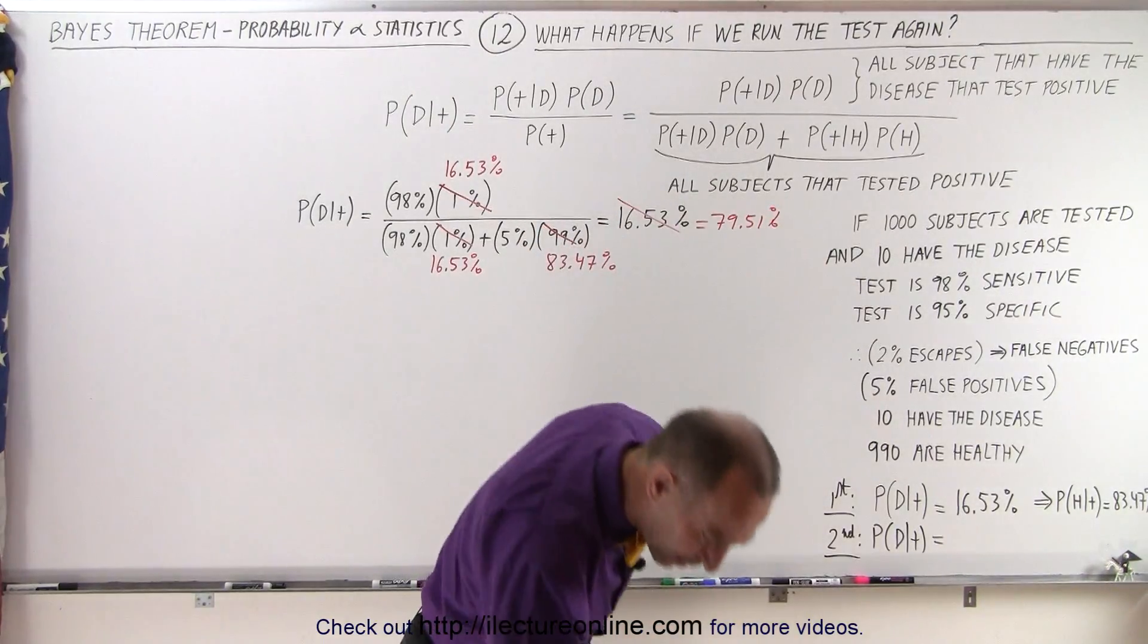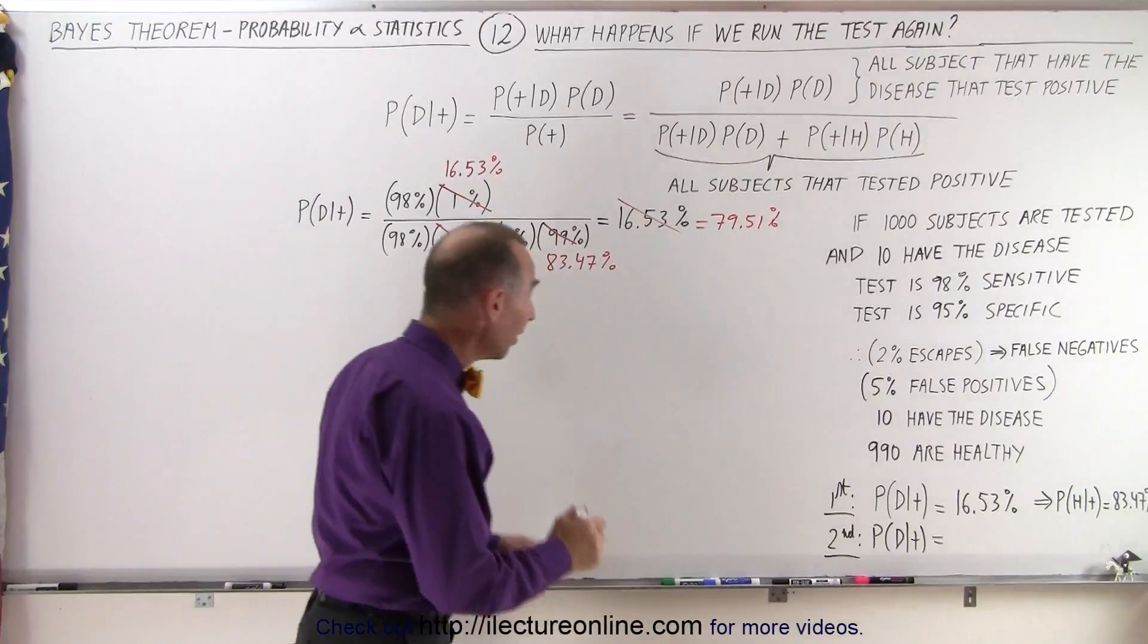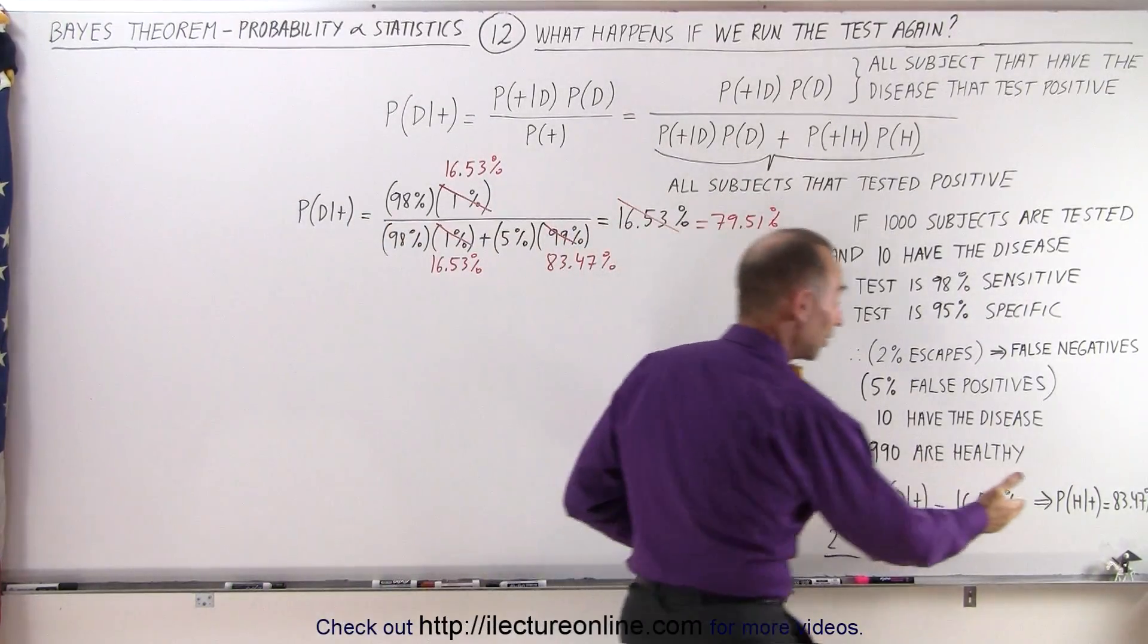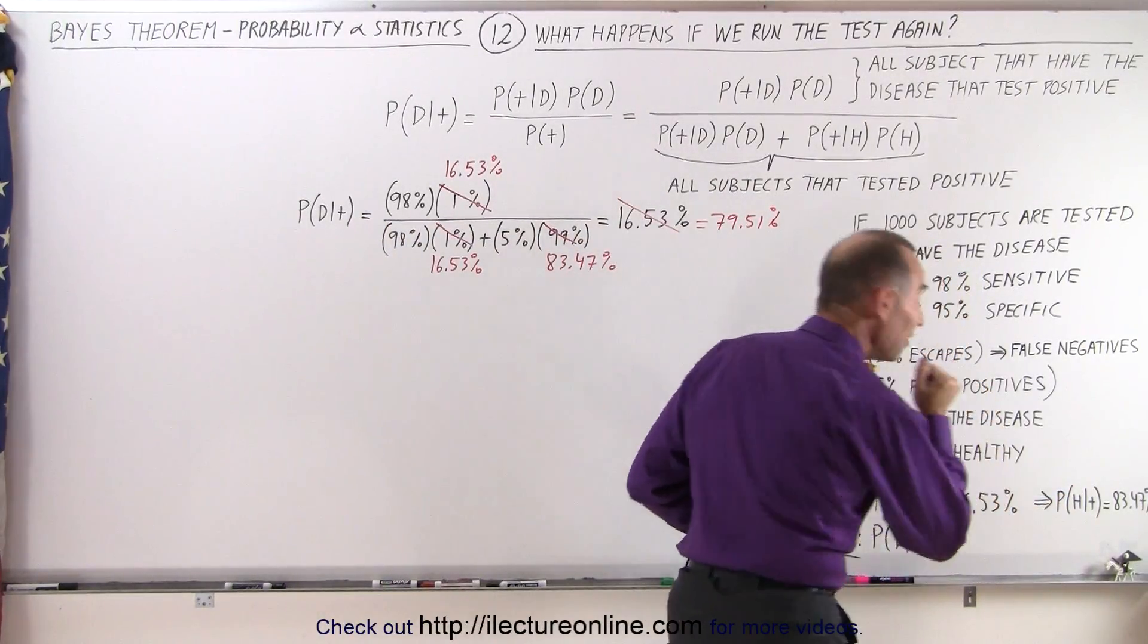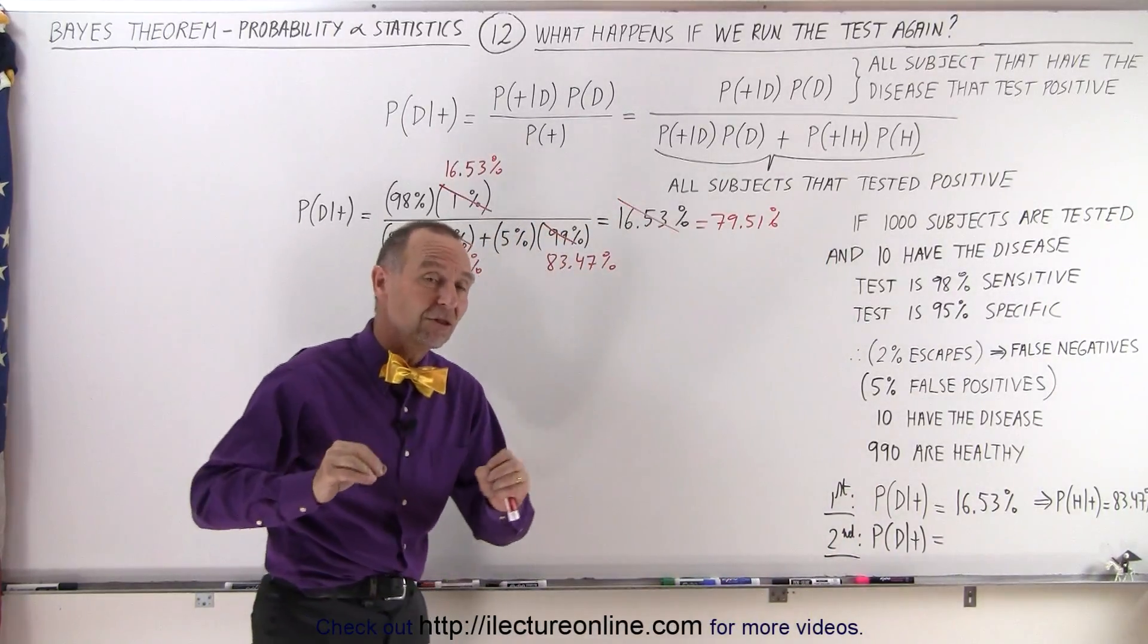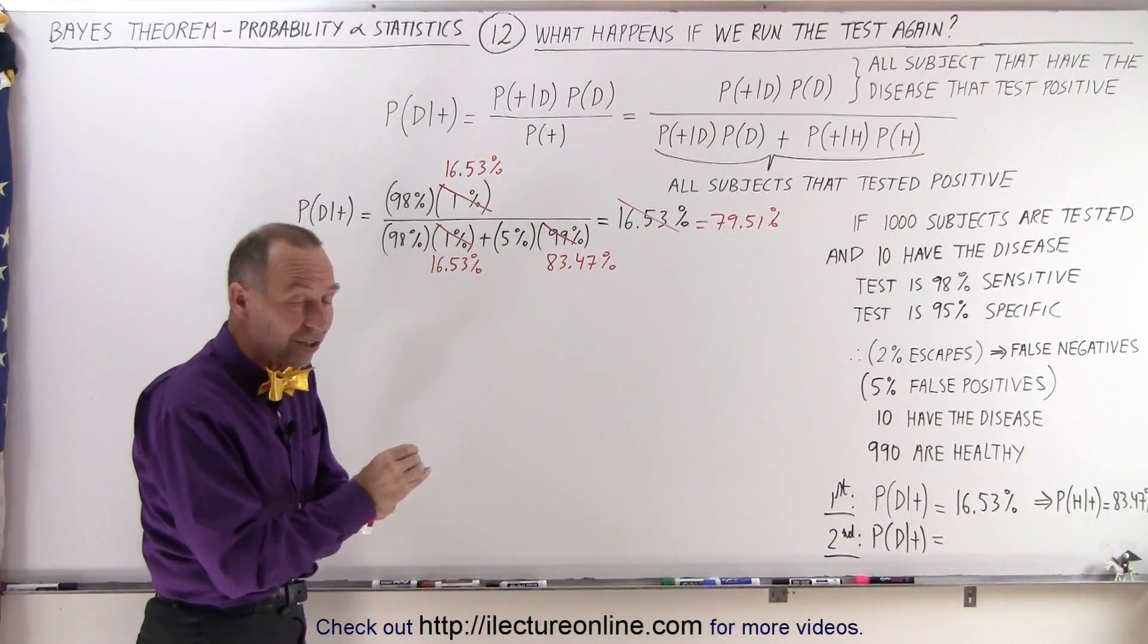Let's see if I got that right. 79.51%. So instead of having a probability of 16.53% that you have the condition you're testing for when you test the first time and you test positive,